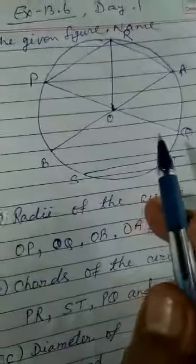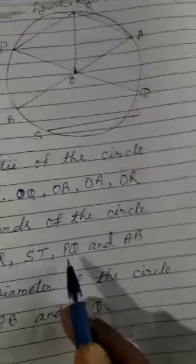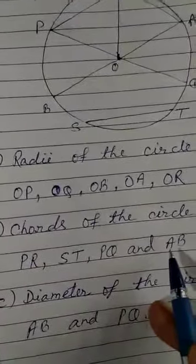So these are four chords of this figure. So you will write: PR, ST, PQ, and AB are the chords of the circle.